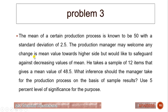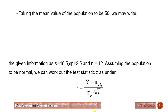Problem 3: The mean of a certain production process is known to be 50 with a standard deviation of 2.5. The production manager welcomes any change in the mean towards the higher side but would like to safeguard against a decreasing value of the mean. A sample of 12 items gives a mean value of 48.5. The null hypothesis is that the population mean equals 50.